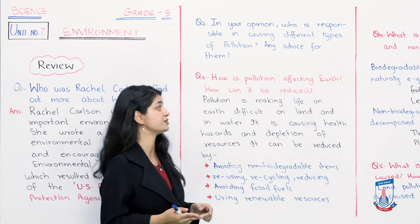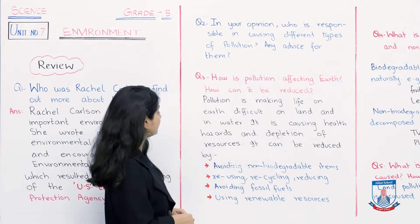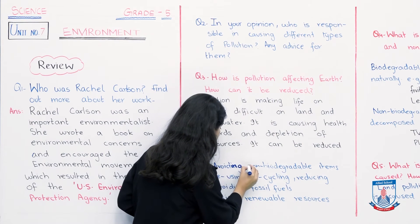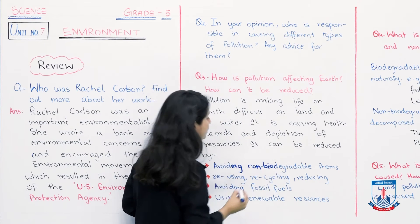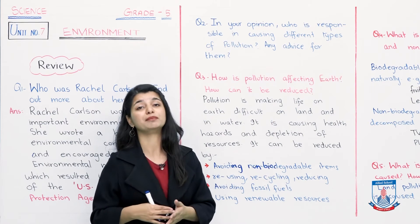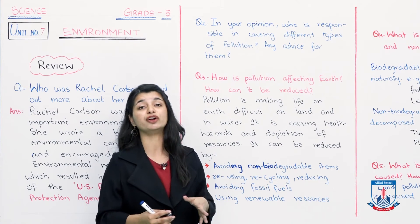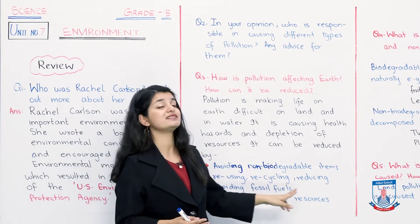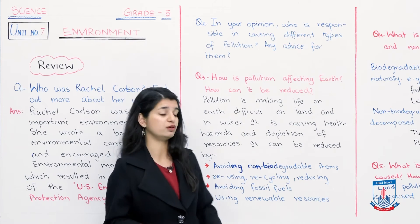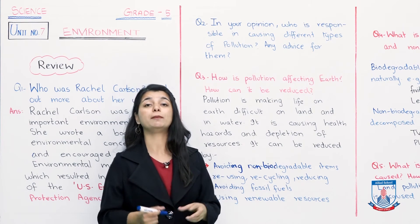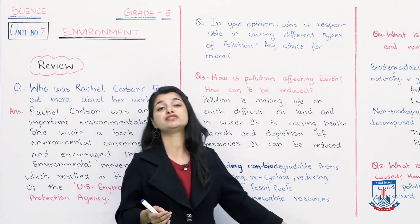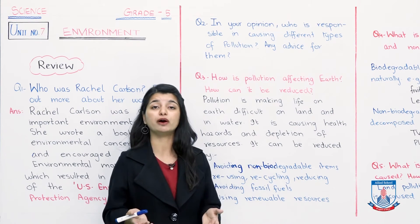Moving to the second part of the question — how can pollution be reduced? It can be reduced by avoiding non-biodegradable items, reusing, recycling, and reducing. We reduce the use of non-biodegradable items because they don't decompose and live for many years, polluting the environment. After that, reuse, recycle, and reduce — the three R's. Additionally, avoiding fossil fuels like coal and natural gas, which also contribute to pollution — if you switch to renewable resources such as solar energy or wind energy, you will also contribute positively to the environment.